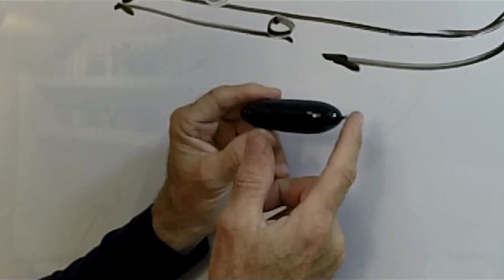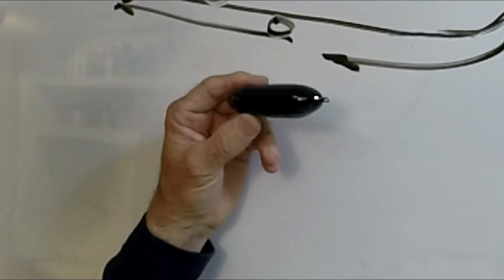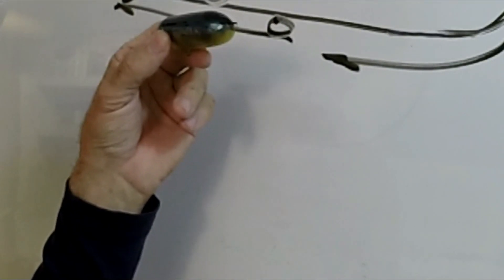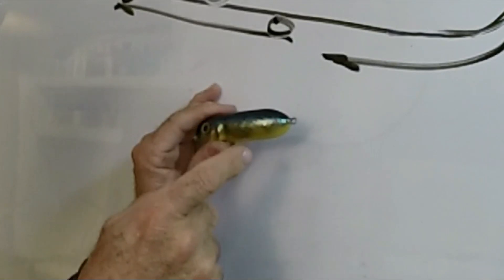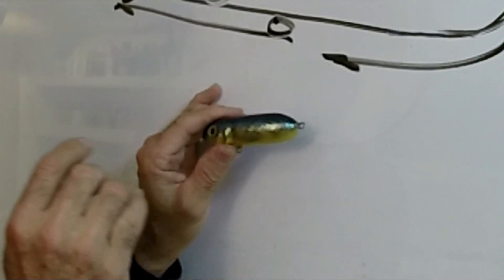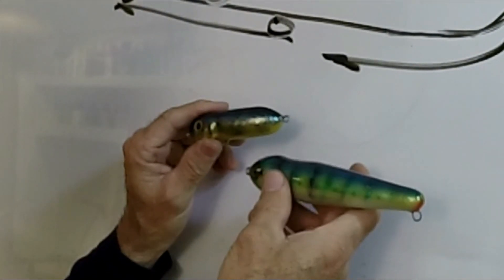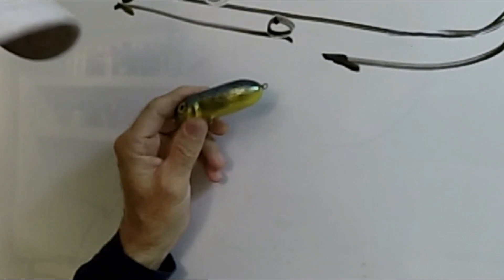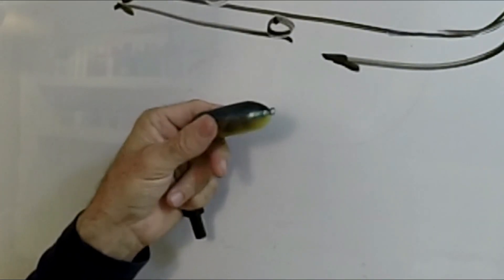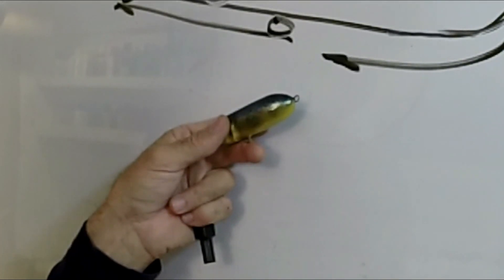So it flies a long way and it flies straight, just like this. I can reach way out with this thing without spooking the fish. But I didn't want to have to cast some monstrous big lure, have a giant splash down and spook the fish.